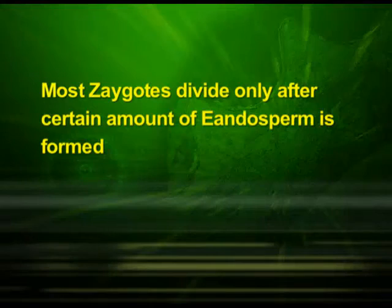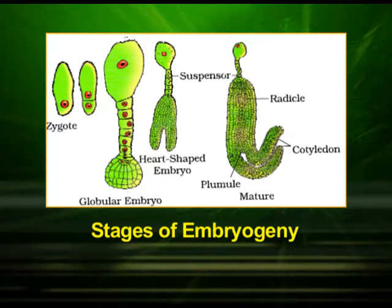Now let us discuss the embryo. The embryo develops at the micropylar end of the embryo sac, where the zygote is situated. Most zygotes divide only after a certain amount of endosperm is formed — an adaptation to provide assured nutrition to the developing embryo. Though seeds differ greatly, the early stages of embryo development, called embryogeny, are similar in both monocotyledons and dicotyledons. In this figure, you can observe the stages of embryogeny in a dicotyledonous embryo: the zygote gives rise to the proembryo, and subsequently to the globular, heart-shaped and mature embryo.